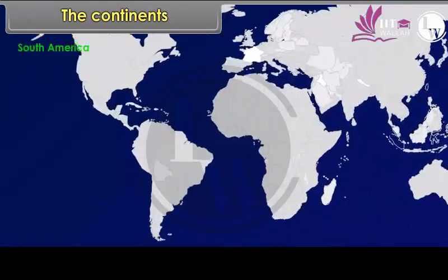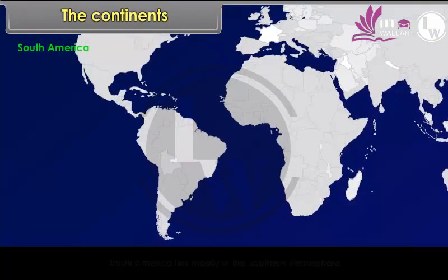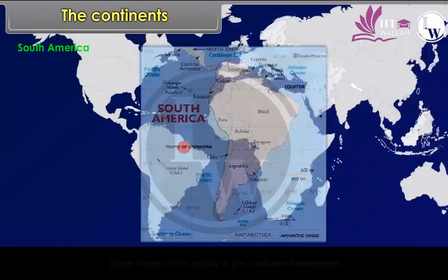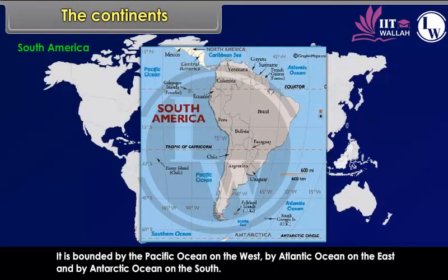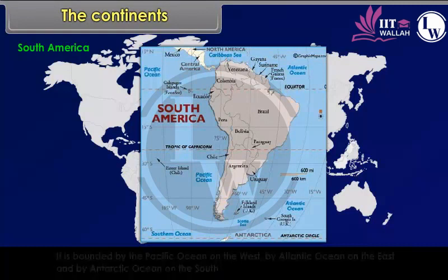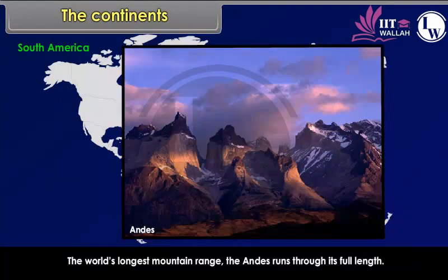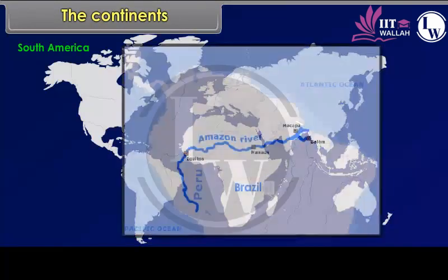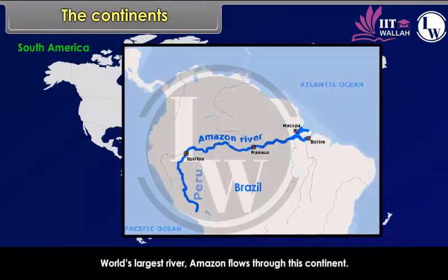South America lies mostly in the southern hemisphere. It is bounded by the Pacific Ocean on the west, the Atlantic Ocean on the east, and the Antarctic Ocean on the south. The world's longest mountain range, the Andes, runs through its full length. The world's largest river, the Amazon, flows through this continent.